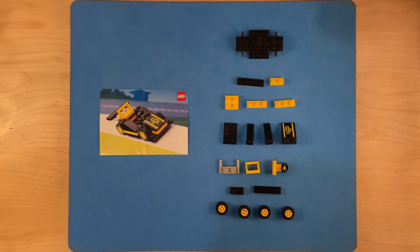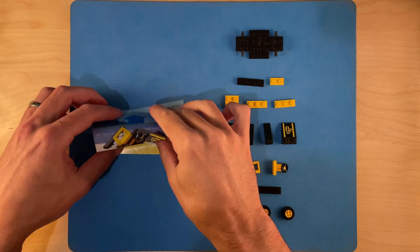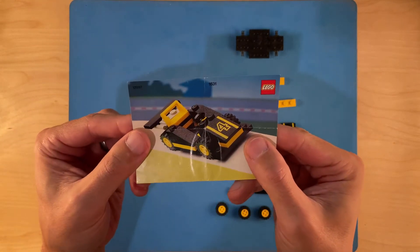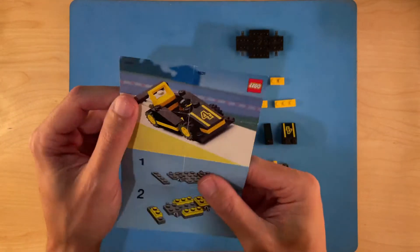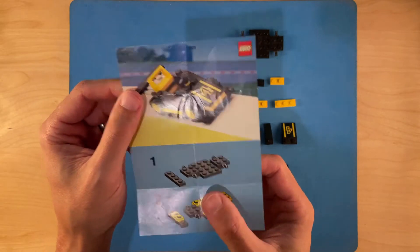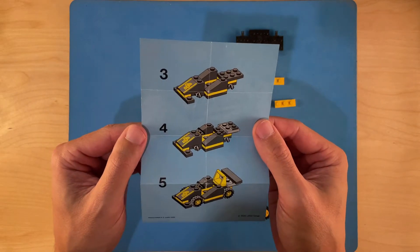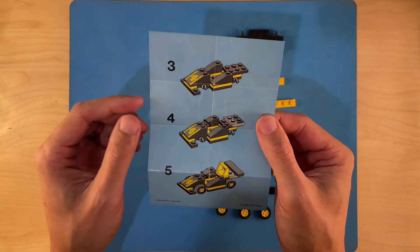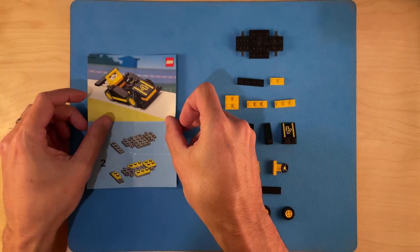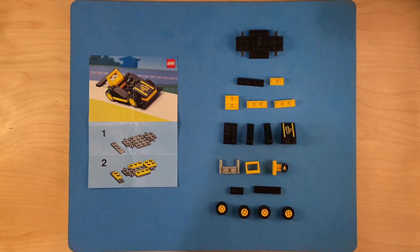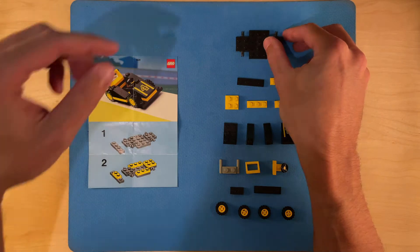G'day, today we are building set 1631, black race car. It's a part of the town racing theme, it was released in 1990 and it was limited according to Brickset.com. It's 23 pieces, so let's kick it off.